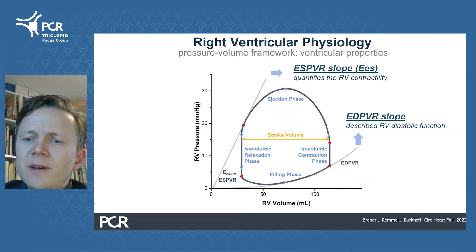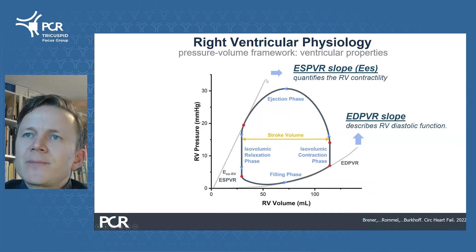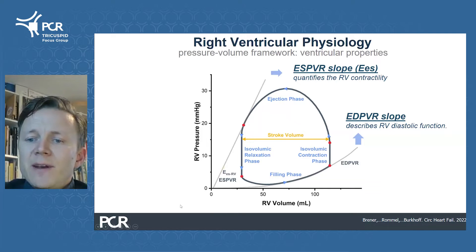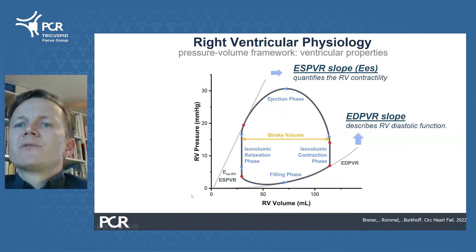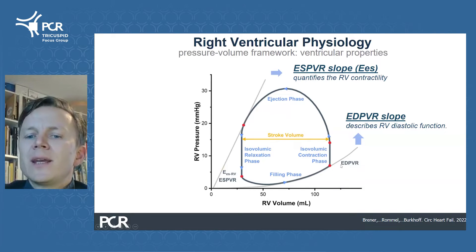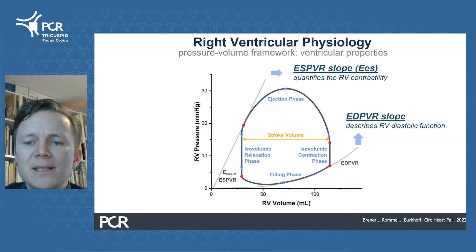Systolic properties of the right ventricle can be summarized by the slope of the end-systolic pressure-volume relationship, or end-systolic elastance. As this slope becomes steeper, contractility increases. The diastolic properties of the right ventricle are represented by the end-diastolic pressure-volume relationship, which hugs the filling phase of the right ventricle. One of the main advantages of pressure-volume loop assessment is that systolic and diastolic properties can be assessed in a load-independent fashion.